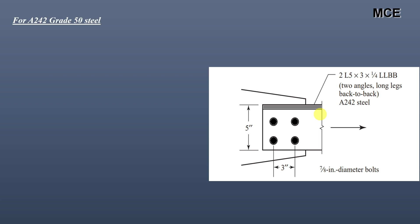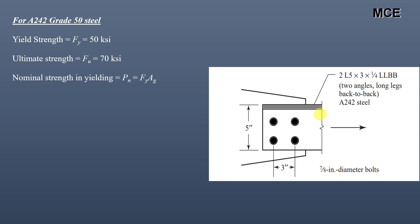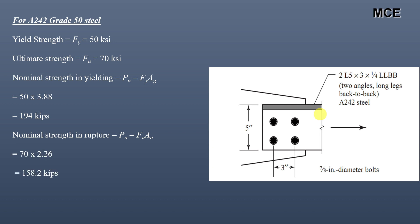For A242 Grade 50 steel, the yield strength is 50 ksi and the ultimate strength is 70 ksi. The nominal strength in yielding = Fy × Ag = 50 × 3.88 = 194 kips. The nominal strength in rupture = Fu × Ae = 70 × 2.26 = 158.2 kips.